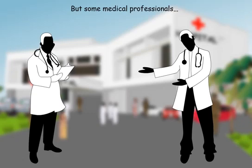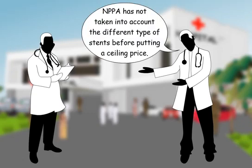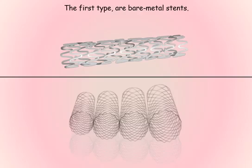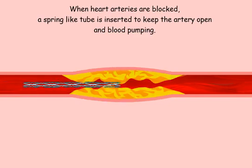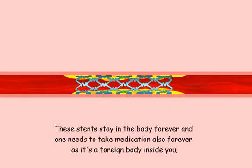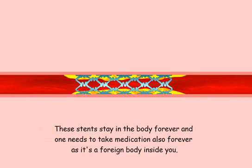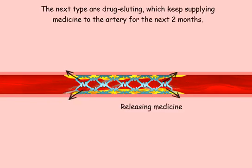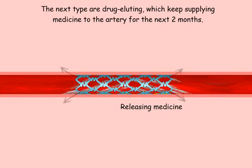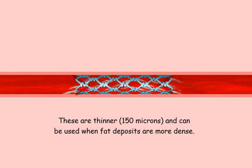But some medical professionals argued that NPPA has not taken into account the different types of stents before putting a ceiling price. The first type are bare metal stents — when heart arteries are blocked, a spring-like tube is inserted to keep the artery open and blood pumping. These stents stay in the body forever, and one needs to take medication also forever as it's a foreign body inside you. These have been capped at 7,260 rupees. The next type are drug eluting stents, which keep supplying medicine to the artery for the next two months. These are thinner, about 150 microns, and can be used when fat deposits are more dense.